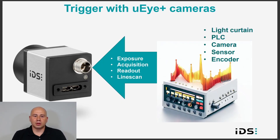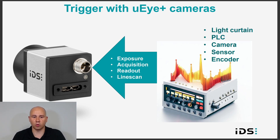Trigger is similar to flash, except it is a signal going to the camera instead of coming from the camera. The signal can come from any external trigger source such as light curtains, PLCs, encoders, or other sensors. And it can trigger various events in the camera, such as capturing one or more images, sensor readout, and triggering the exposure of a single line while in line scan mode.